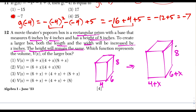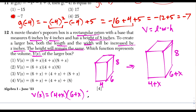The volume of a rectangular prism is length times width times height. As a function: V of x equals 4 plus x times 6 plus x times 8. This matches choice 2, since the height remains 8. Choice 2 is our answer.